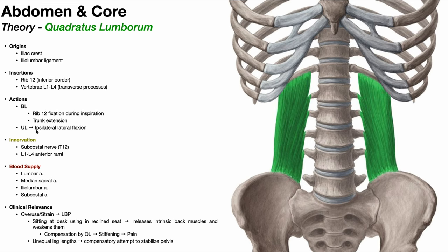The quadratus lumborum is innervated by the subcostal nerve — T12 — and also receives contributions from the anterior rami of levels L1 through L4. The blood supply is via the lumbar artery, the median sacral artery, the iliolumbar artery, and the subcostal artery.